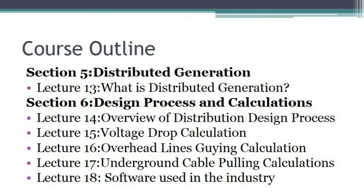Moving on from distributed generation, section six looks at the overall design process and calculations. First, we will look at an overview of the distribution design process, and then we will look at various calculations such as voltage drops, overhead line-guying calculations, as well as underground cable pulling calculations. We will then end this section with looking at software being used in the industry that does these calculations and design for utility companies or engineering companies in general.